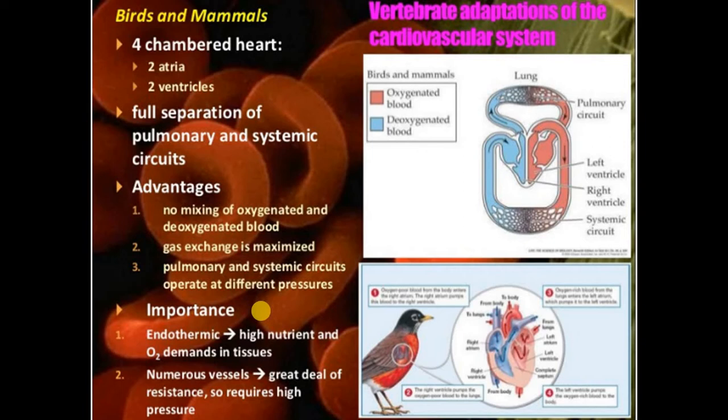If we take the example of an elephant, the rate of heart beat is 25 beats per minute. The size of the elephant is more than that of a human, but the rate of heart beating is less than that of a human. So as the size of the organism increases, the rate of heart rate decreases.